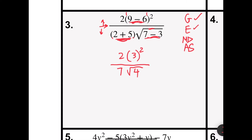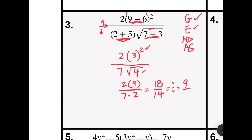Now I'm going to move on to my exponents. I know that 3 squared is 9, so I would have 2 times 9 over 7 times the square root of 4, which is 2. Then 2 times 9 is 18, and 7 times 2 is 14. If I reduce 18 over 14 by dividing by 2, I will get 9 sevenths.